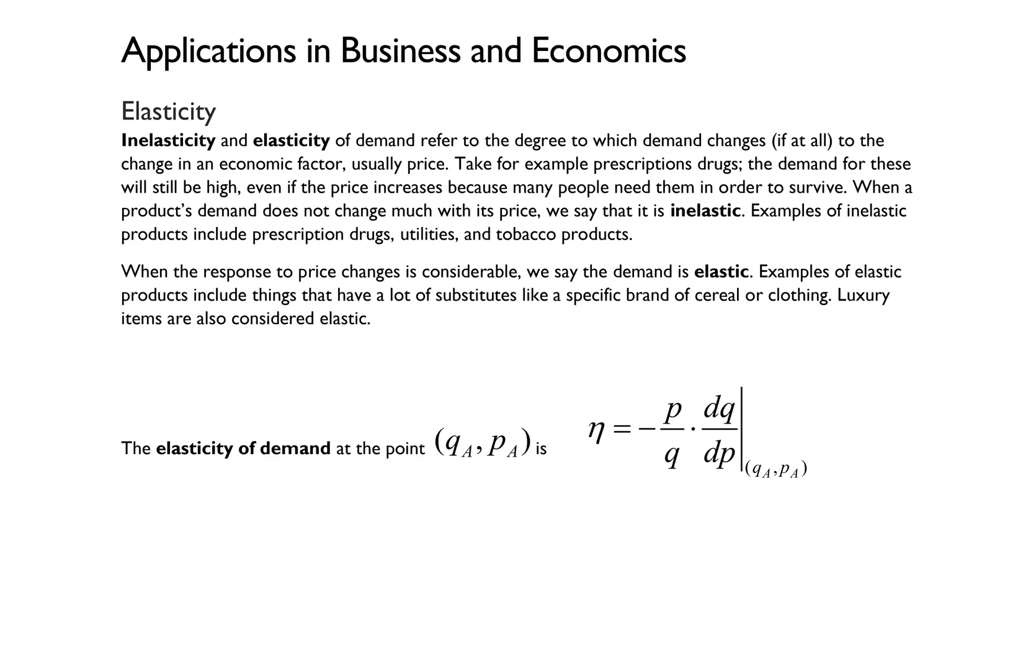The elasticity of demand at the point (q_a, p_a) is given by this formula. If you've never seen this symbol before, this is the Greek letter eta. And eta represents the elasticity of demand, and it's equal to negative p over q times dq dp, all of that evaluated at the point (q_a, p_a). Remember, p represents the price, and q represents the quantity.